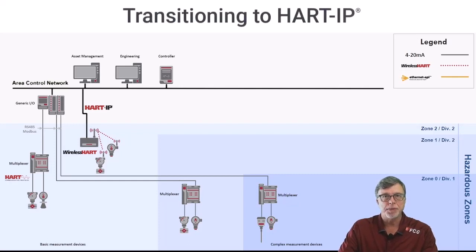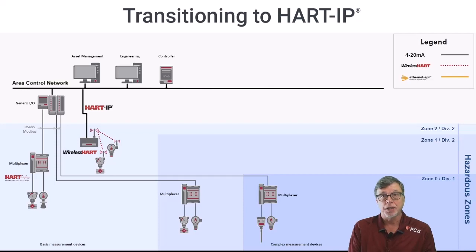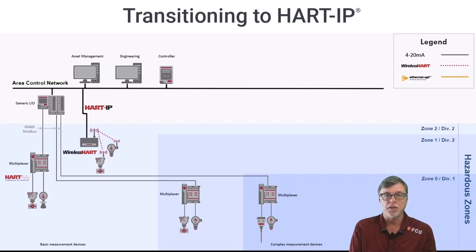Transitioning to HART IP Instrumentation with Ethernet APL. Today, the HART Communications Protocol is used in most of the process automation plants around the world. The technology is well-known, reliable, and easy to use. Today's HART-based control architecture relies on devices using the 4 to 20 milliamp or wireless HART physical layers. Often, the wireless HART gateway connects to the control network with HART IP.